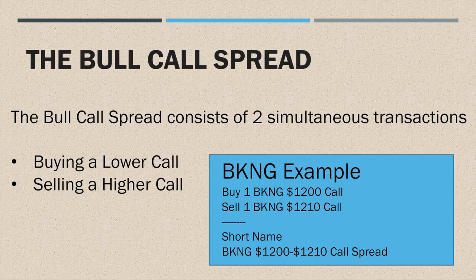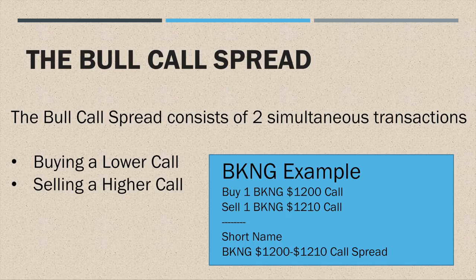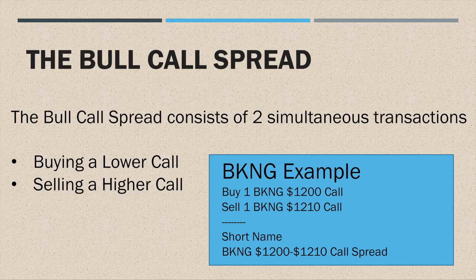The critical component here is that the whole trade needs to be done together. You can't buy a 1200 call and then later sell a 1210 call to construct your spread. Technically you could do that, but it's very dangerous — it's called lagging in, where you add a second leg later. For the purposes of the 25k methodology, we always do this spread trade together, so both positions are executed and closed at the same time.